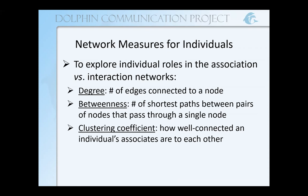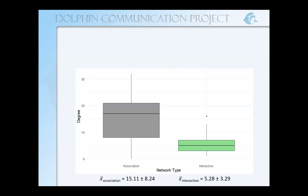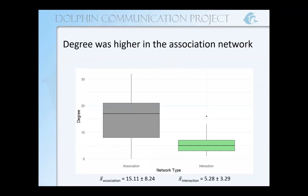I calculated all of these measures for the individuals in our networks and then averaged across the whole network so we could look at the distribution and compare them. As a reminder for anyone who hasn't looked at a box plot recently: the middle line is our median, 50% of our values lie below and above this line; the bottom line is our first quartile where 25% of values lie below it; and the third quartile where 75% of values fall below it. The dots show our outliers. Just by looking, we can see that degree was higher in the association network than in the interaction network, and this difference was significant.